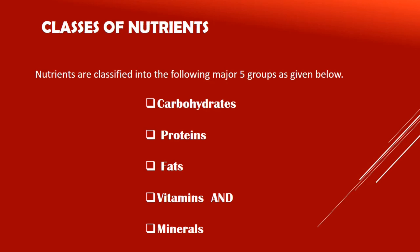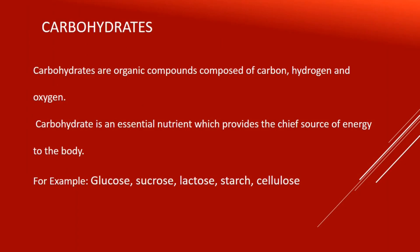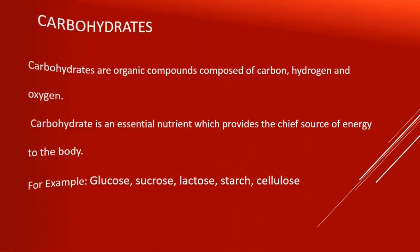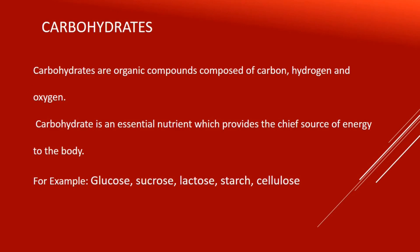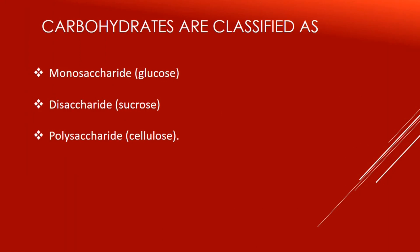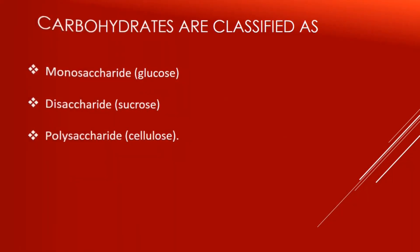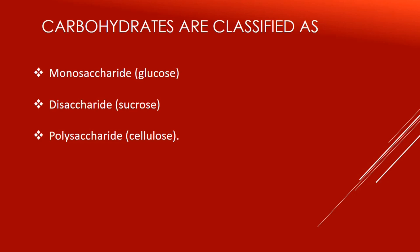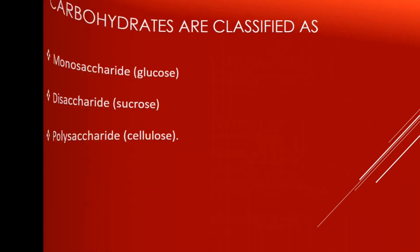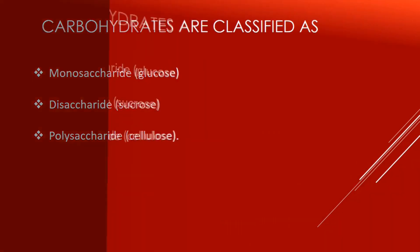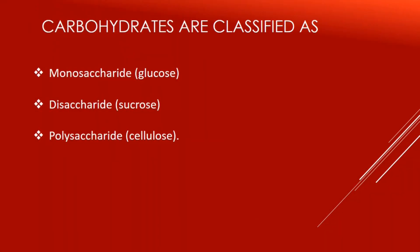Carbohydrates are a very essential nutrient which provides the chief source of energy to the body. For example, glucose, sucrose, lactose, starch, and cellulose. The classification of carbohydrates is based on the number of sugar molecules present in each group. They are monosaccharides — that is glucose — disaccharides — that is sucrose — and polysaccharides — that is cellulose.